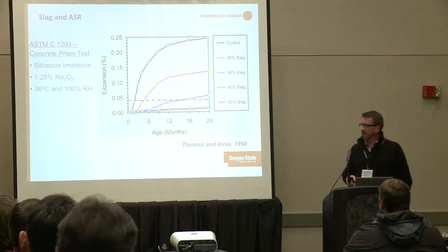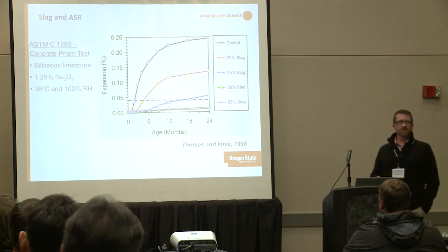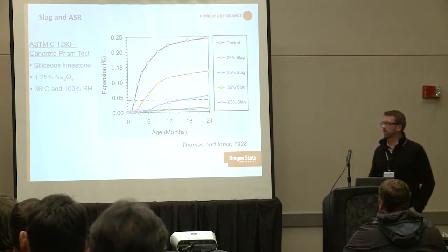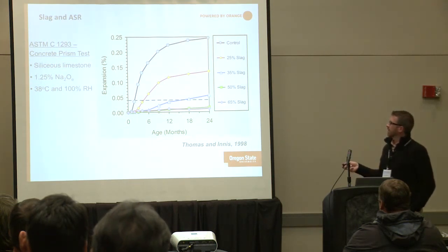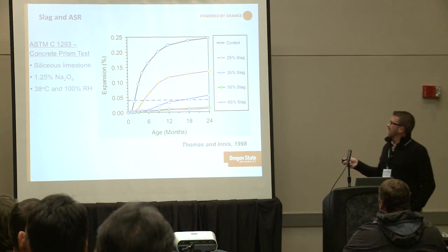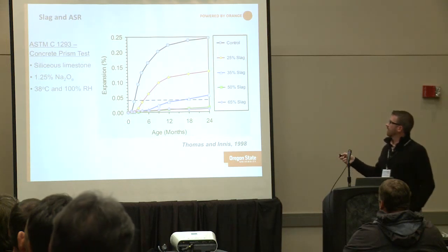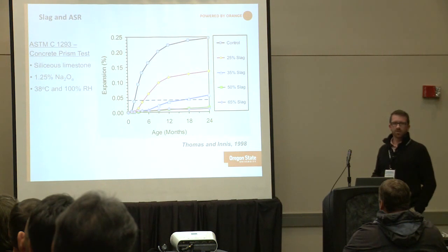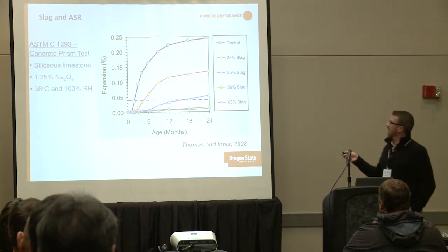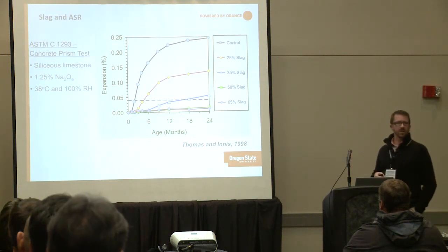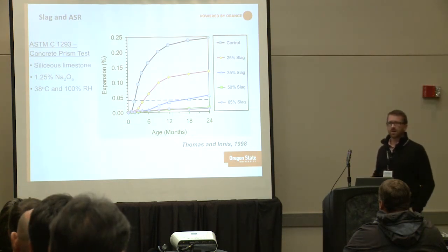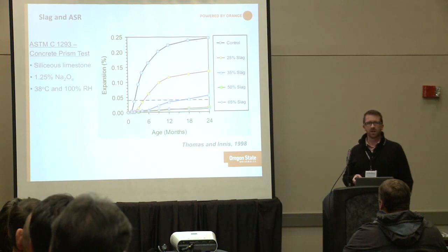This figure highlights that almost any supplementary cementitious material, used in the right quantity, can control a reactive aggregate. Showing a highly reactive spratt limestone aggregate from Canada, the control concrete mixture reaches about 0.24% expansion at one year in the concrete prism test. As slag replacement levels increase, reactivity decreases — but 25% slag is not enough. You really need to get to about 50% or 65% slag to control the reactivity of this aggregate.